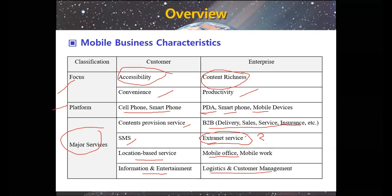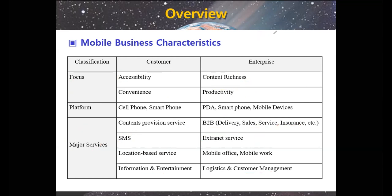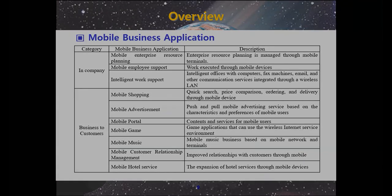Can you explain the extranet and SMS — what is the difference? SMS is short messages, cell phone messages. The external service, or internet service, is the relationship between the organization and external parties like suppliers and customers, using the internet to contact suppliers, customers, and other external factors. Okay, here we will talk about mobile business applications.